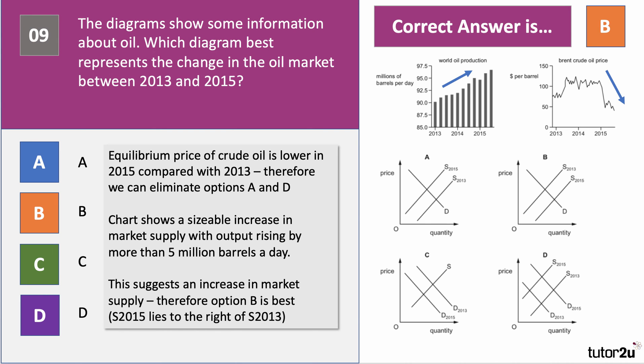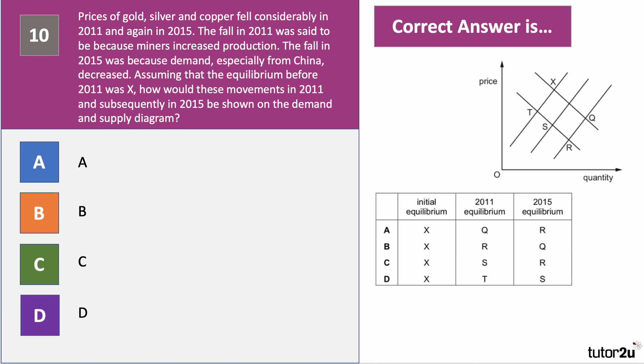Last question — number ten. Prices of gold, silver and copper fell considerably in 2011 and again in 2015. The fall in 2011 was because miners increased production; the fall in 2015 was because demand, especially from China, decreased. Assuming the equilibrium before 2011 was X, how would these movements in 2011 and 2015 be shown on the demand and supply diagram? Take a moment to press the pause button and have a go.